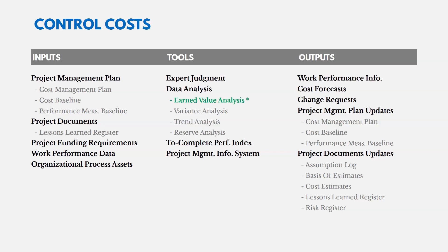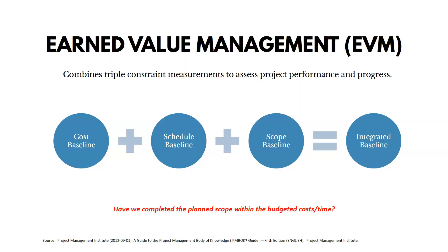Let's look at one tool in particular: earned value analysis. This combines triple constraint measurements to assess project performance and progress — we're looking at the cost, schedule, and scope baselines all at once and coming up with an integrated baseline. We're asking: have we completed the planned scope within the budgeted cost and time? It's thinking about those triple constraint elements together, not separately.